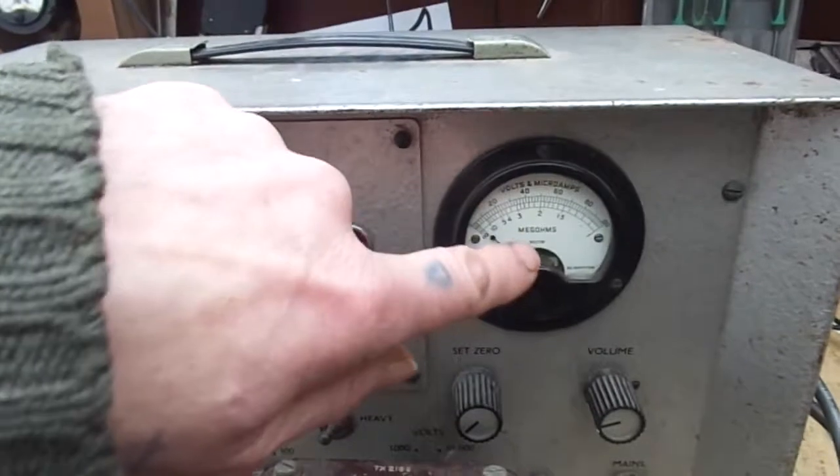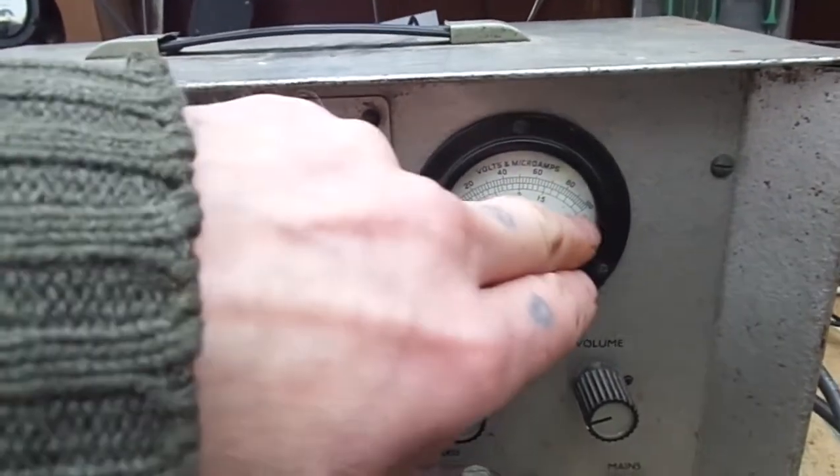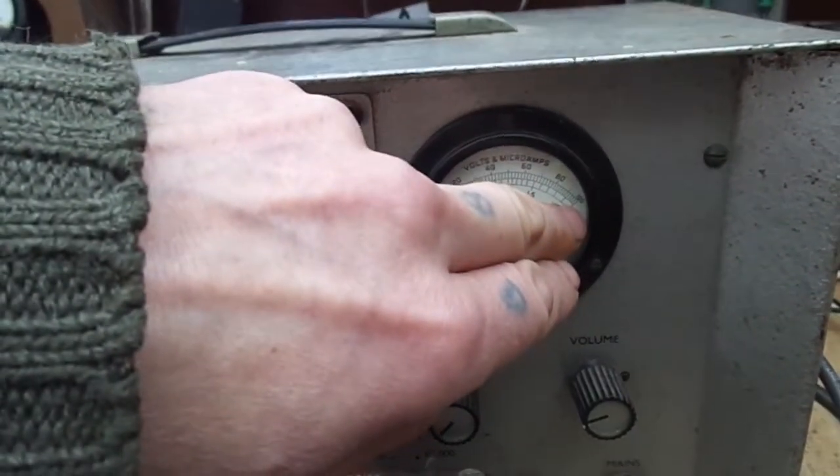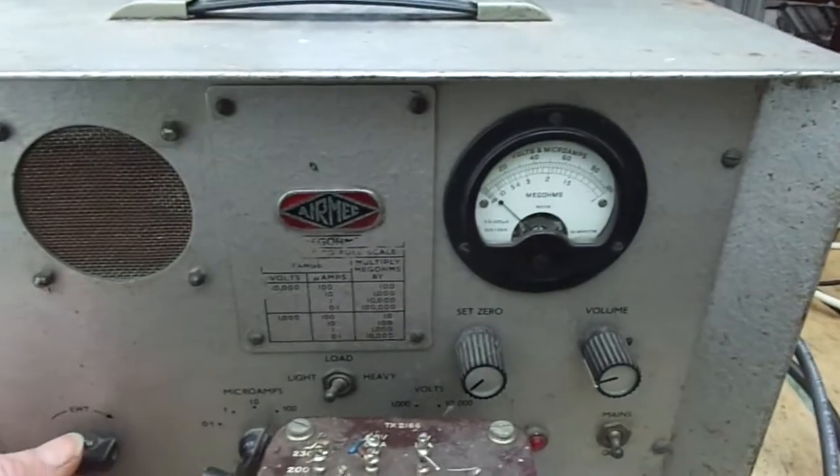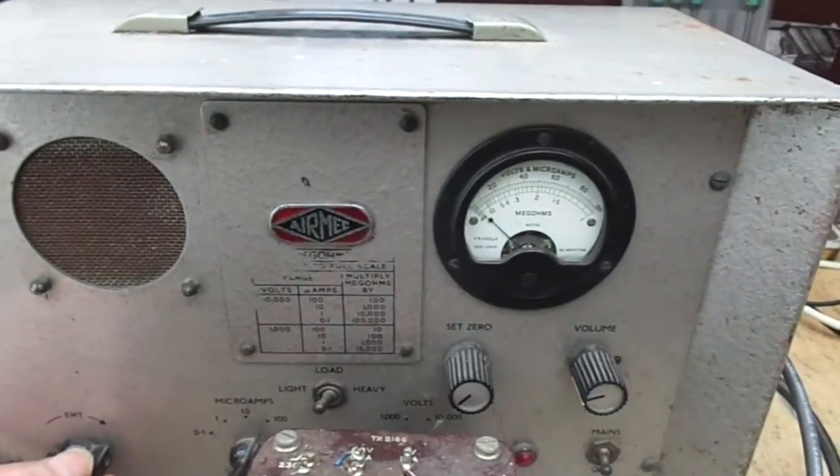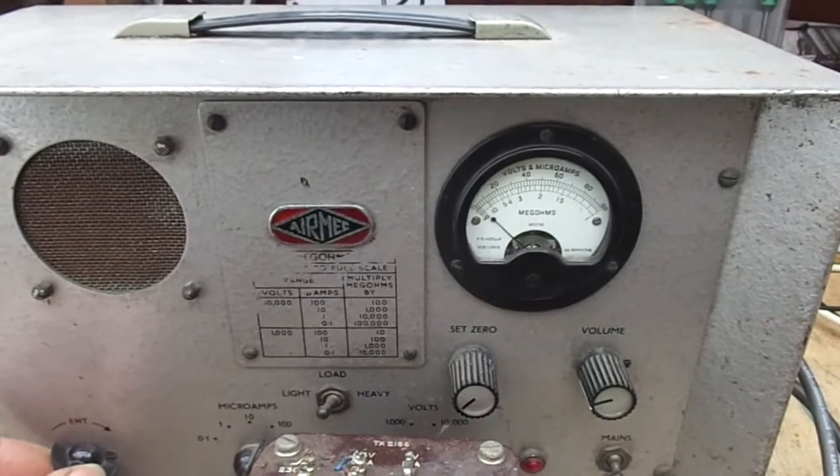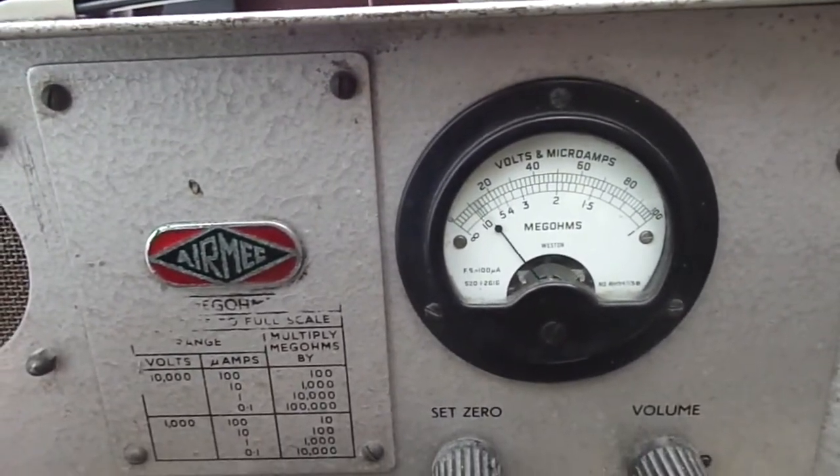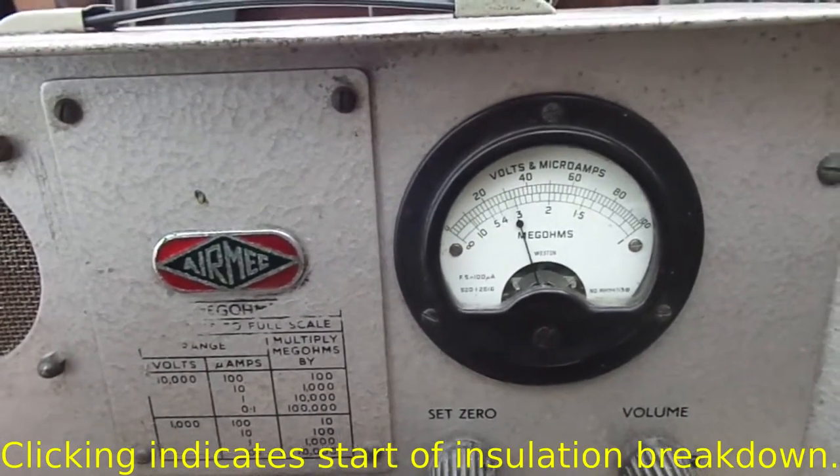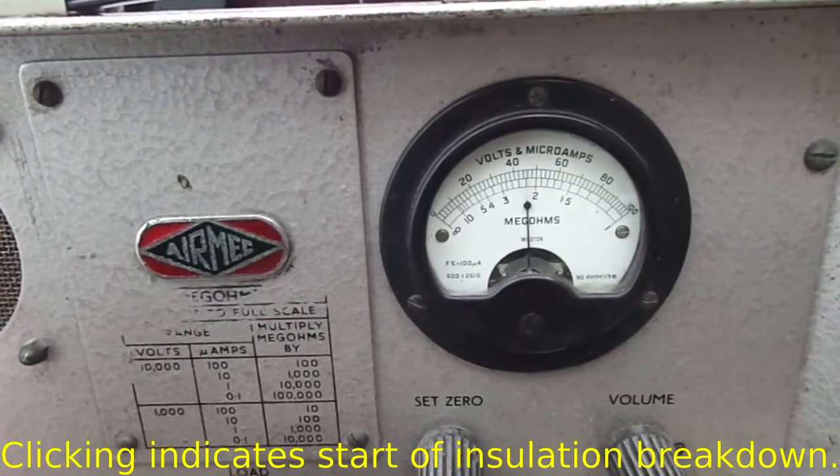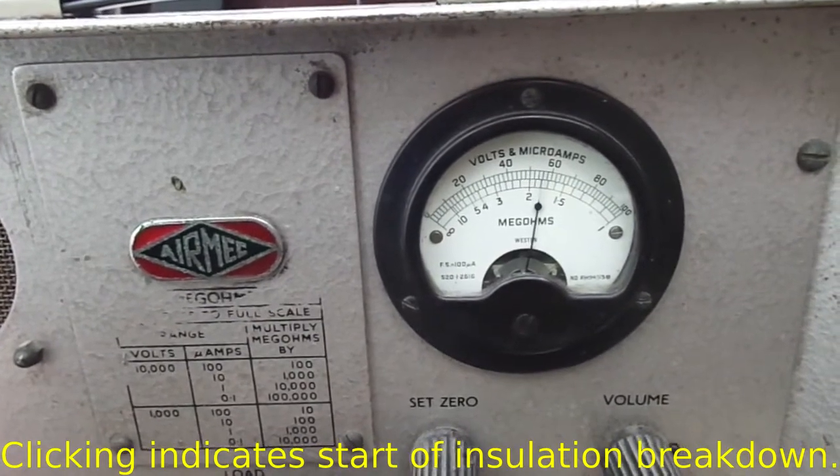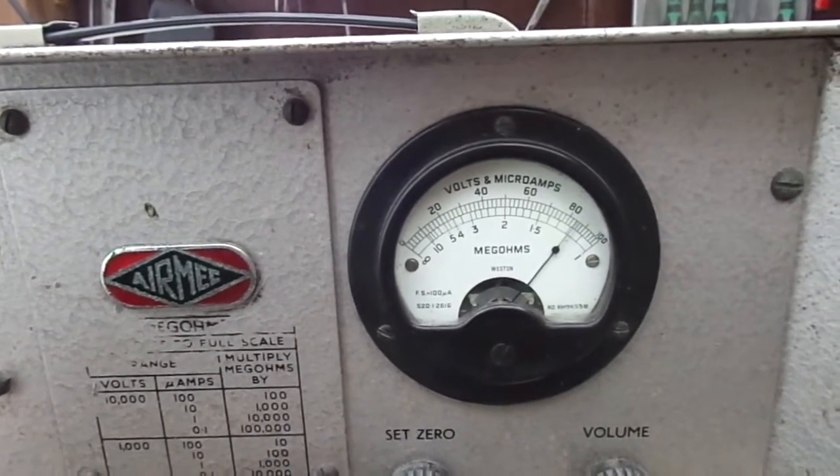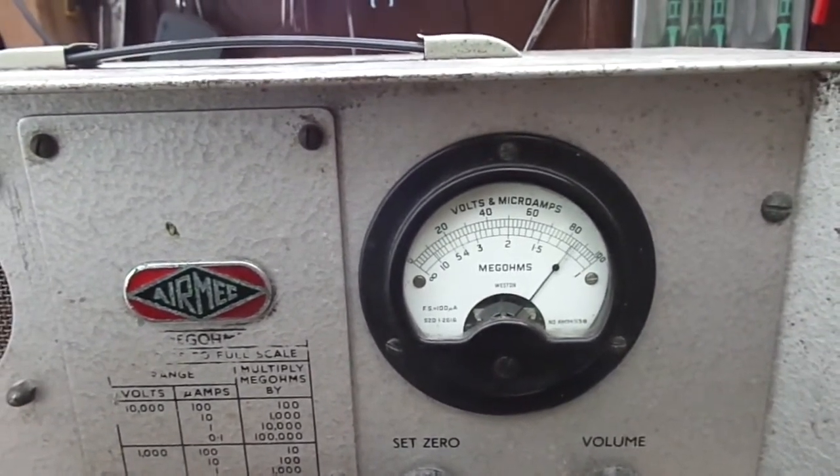When we turn the voltage up you'll notice that if it's really good insulation it will stay up here. If the insulation isn't so good it'll go down this end. Let's crank it up. We're on 10,000 volts at 100 microamps. Point here.